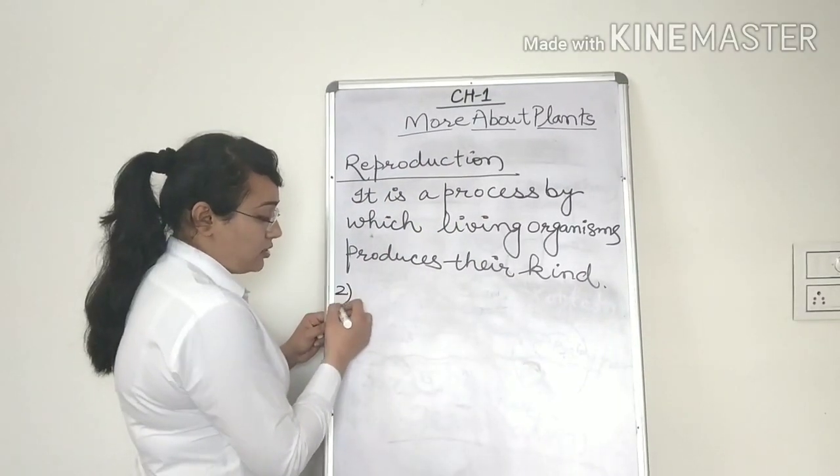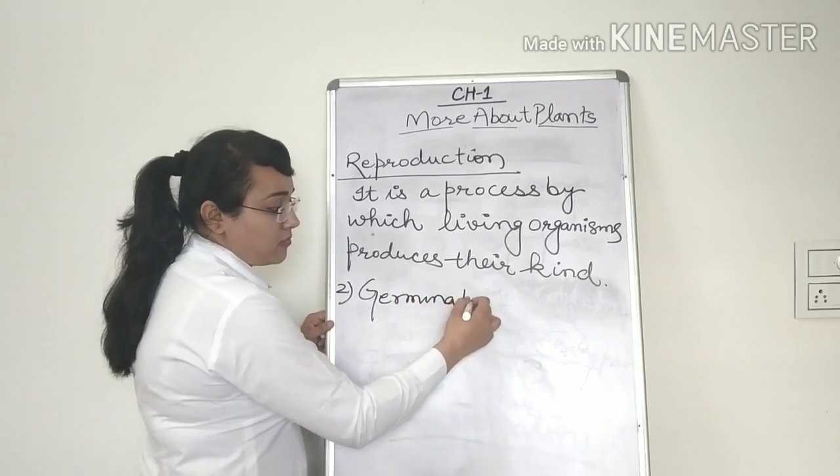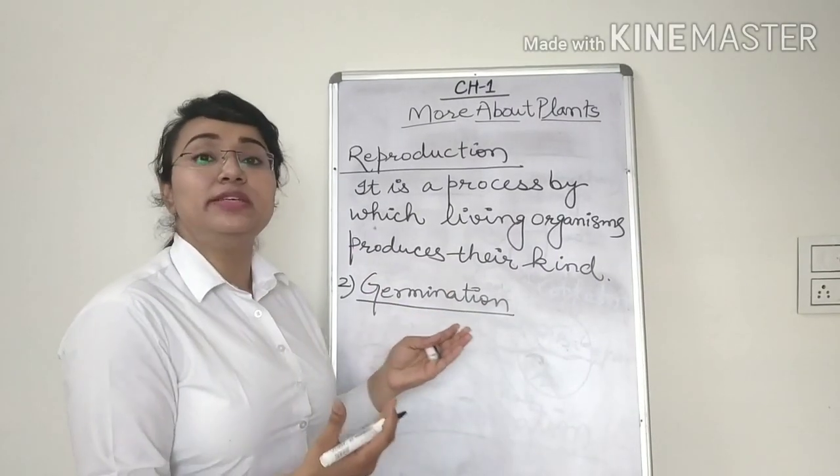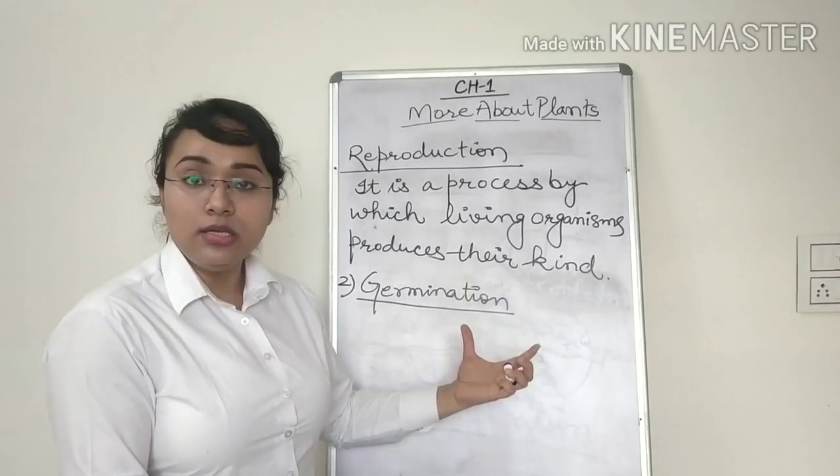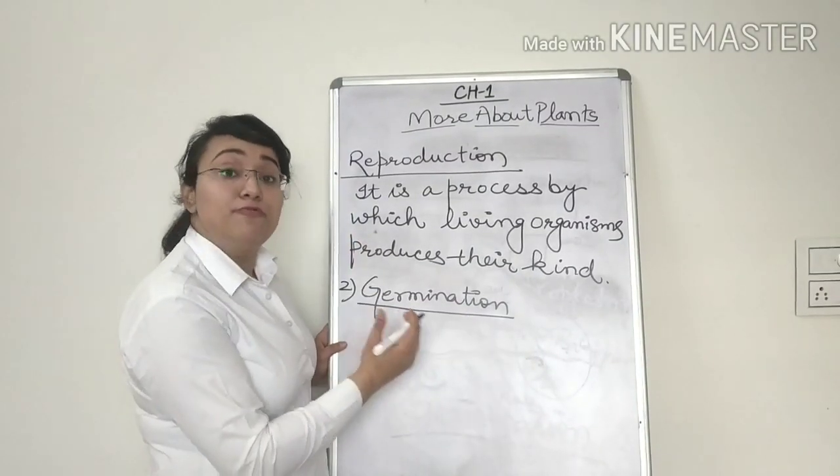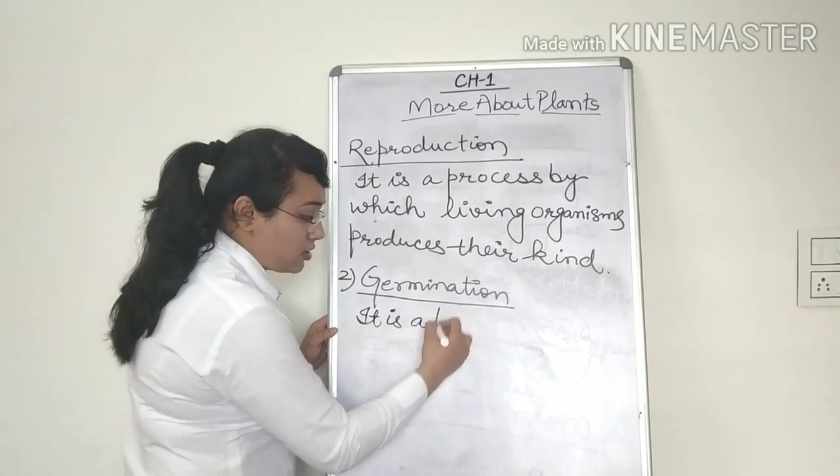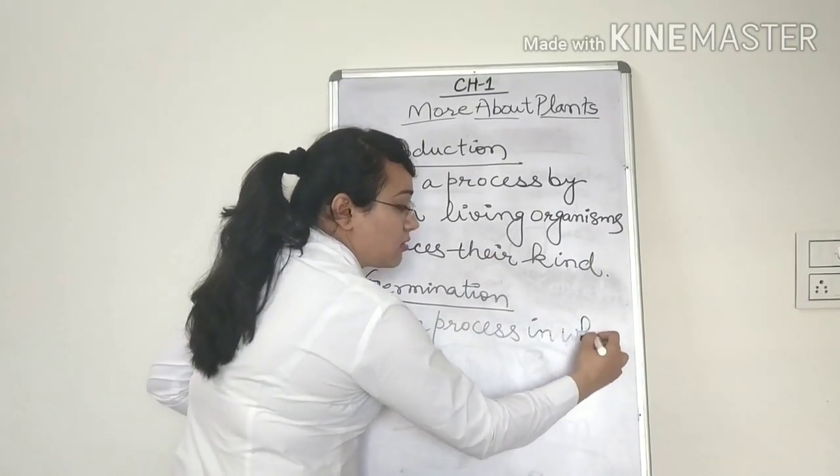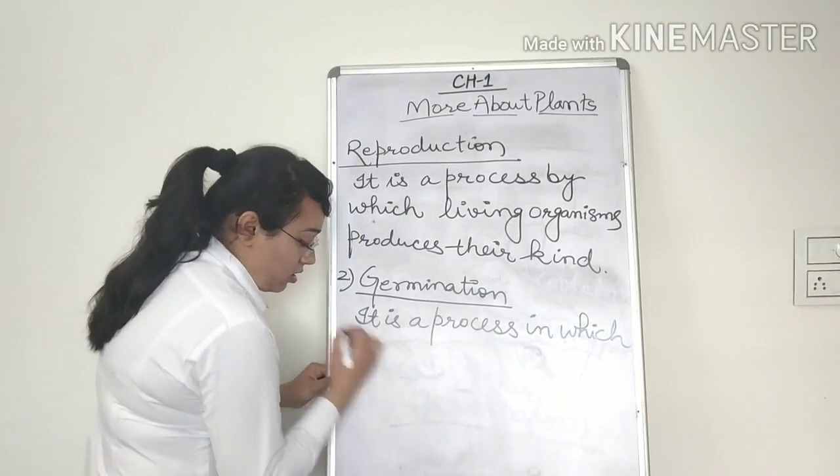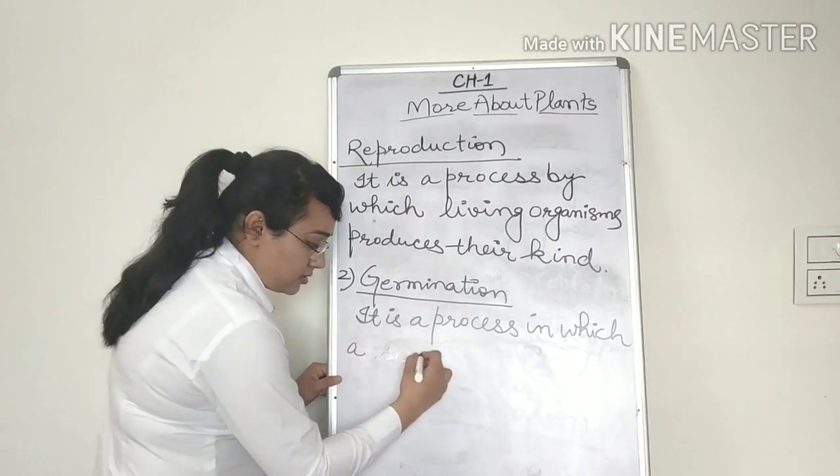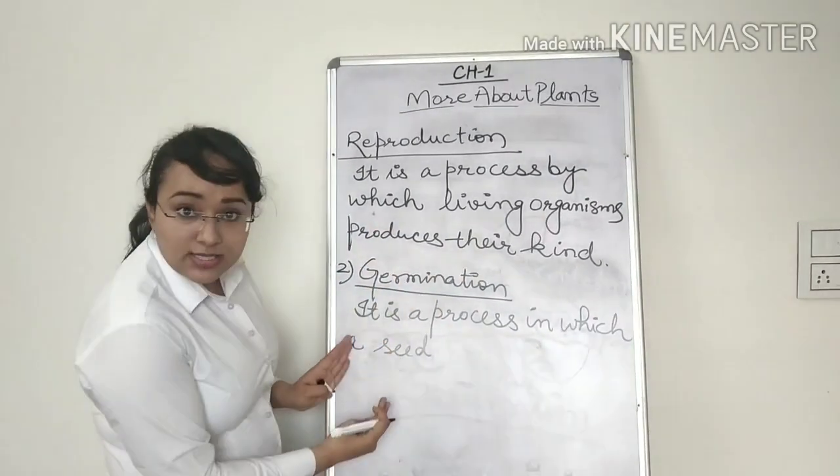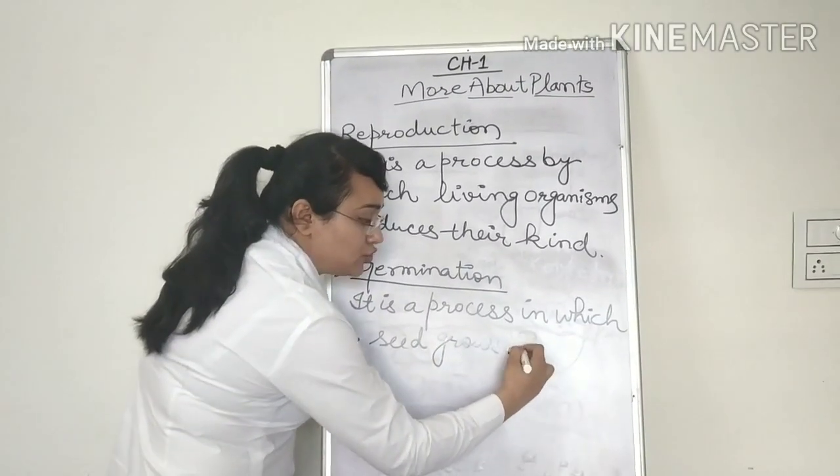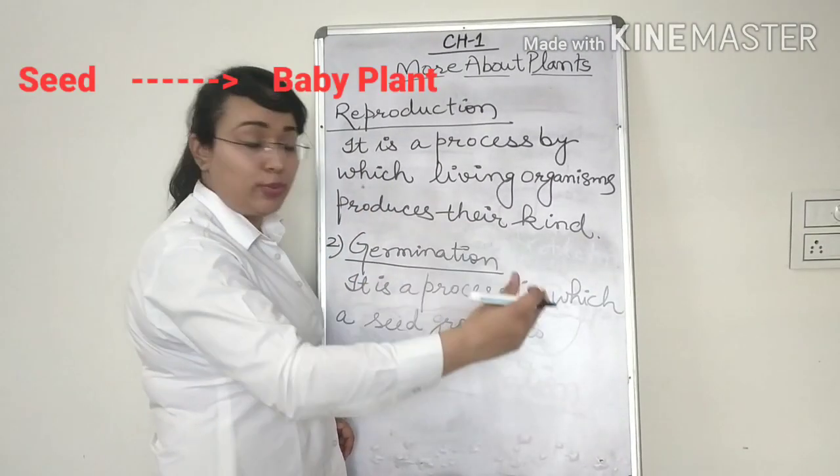Secondly, we have studied about germination. As I explained to you, stepwise, how germination of a seed happens. Now we are going to define germination. It is again a process in which a seed grows into, grows into what? A seed grows into a baby plant.